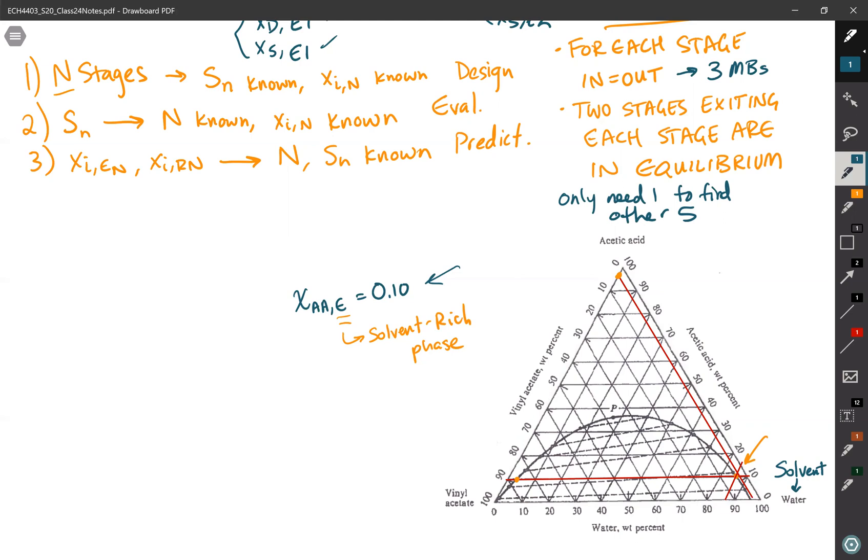Now, how do I get the other three things? Well, if this is coming off of a stage, I know that it must be in equilibrium with the other thing. Therefore, there is a tie line that connects them. So if I go to this point, I can draw a tie line in, and where the tie line intersects the equilibrium data on the other side is the composition of my raffinate, Xi of the raffinate.